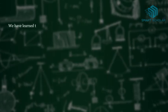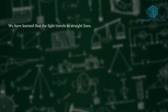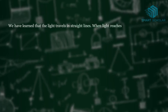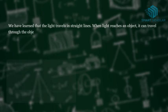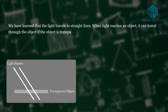We have learned that light travels in a straight line. When light reaches an object, it can travel through the object if it is transparent, but it cannot if it is an opaque object.